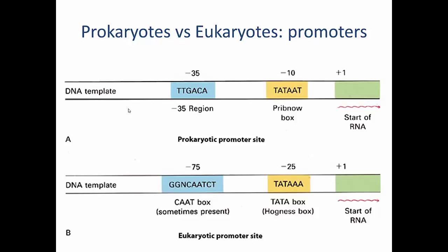At the top of the slide is a classical prokaryotic promoter site. The start of RNA transcription is always defined as plus one, and control elements are located upstream of that plus one start site. Anything to the left is considered upstream, anything to the right is downstream, and RNA transcription moves left to right. In prokaryotes, at approximately minus 10 bases before plus one, we have the Pribnow box, and at minus 35 bases we have the minus 35 region. These two control elements assist in the promotion of RNA transcription.